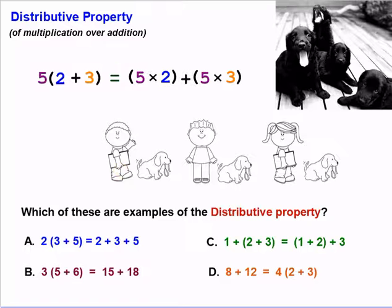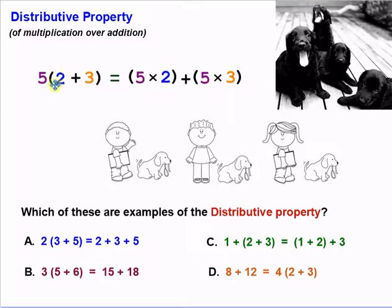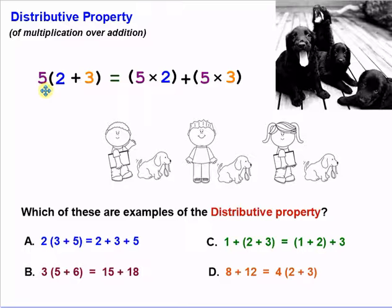The distributive property works in a very similar way. We can see here we have the five being multiplied by two plus three. Notice that we have parentheses around these, which means if we were following PEMDAS, we would use these first. Two plus three is five, and then multiply that by five, and we would get 25.